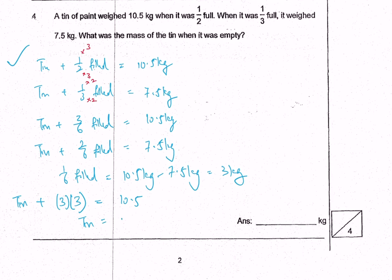So the tin is equal to 10.5 minus 9, which is 1.5 kg. That's the final answer.